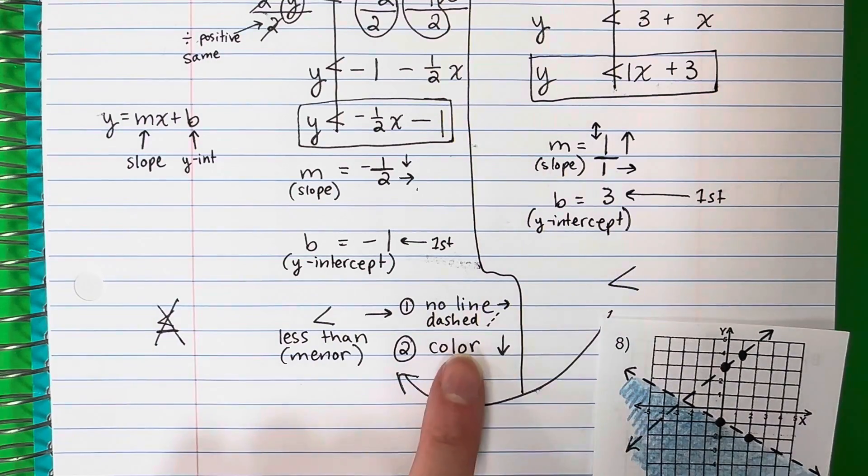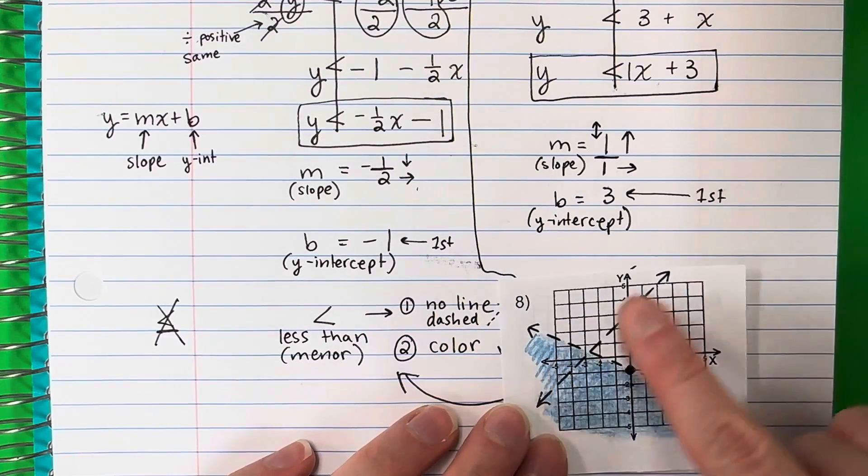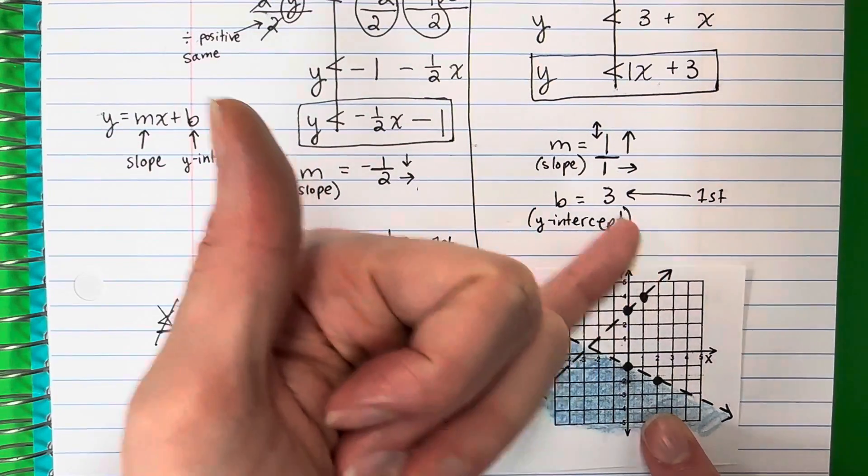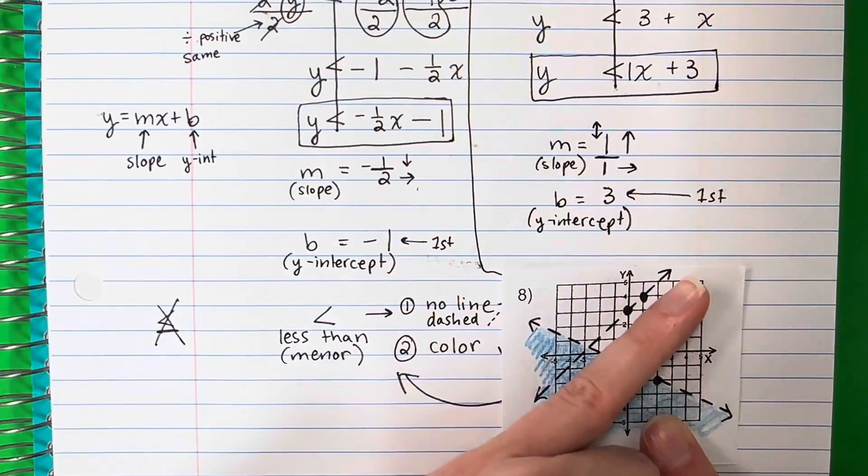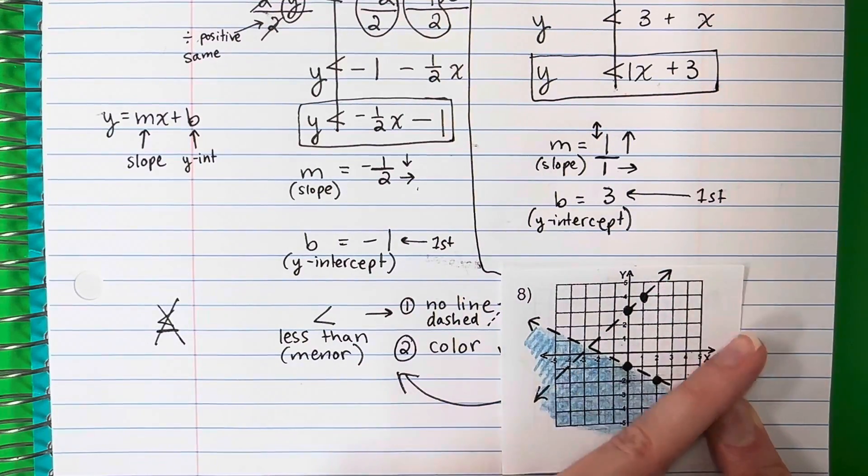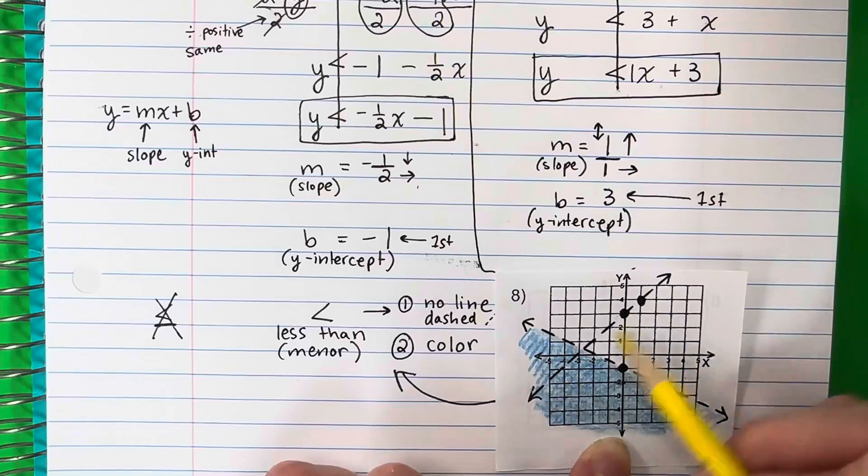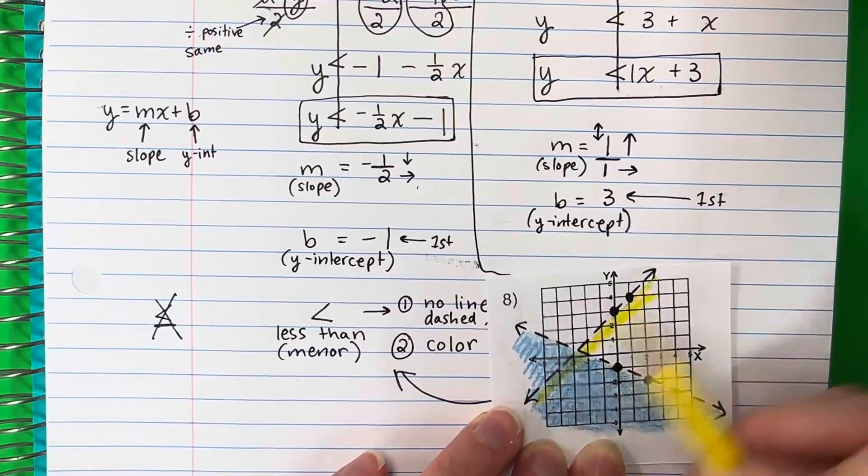And we're also going to color down because this is less. So here's my line, I have up and I have down. I'm going to color down because it's less than. And remember this is down, do you see down? So you're going to go ahead and color down from that line.